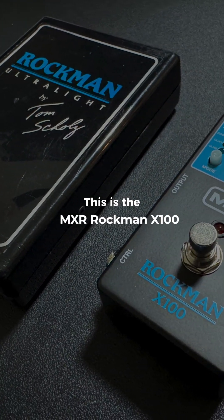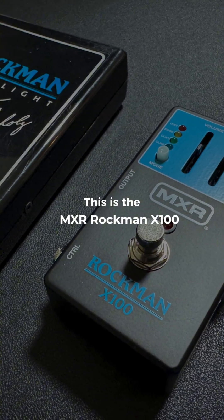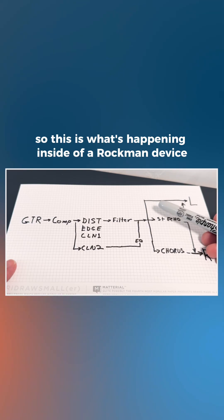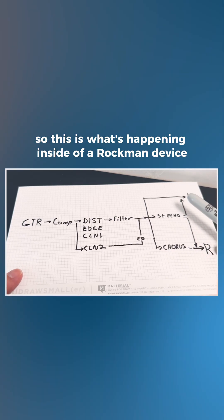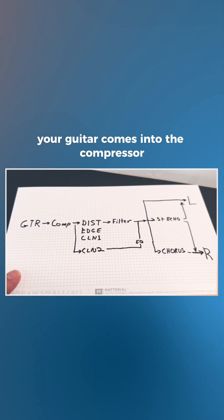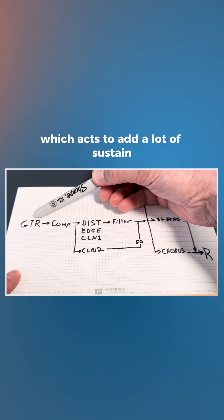This is the MXR Rockman X100. So this is what's happening inside of a Rockman device. Your guitar comes into the compressor, which acts to add a lot of sustain.